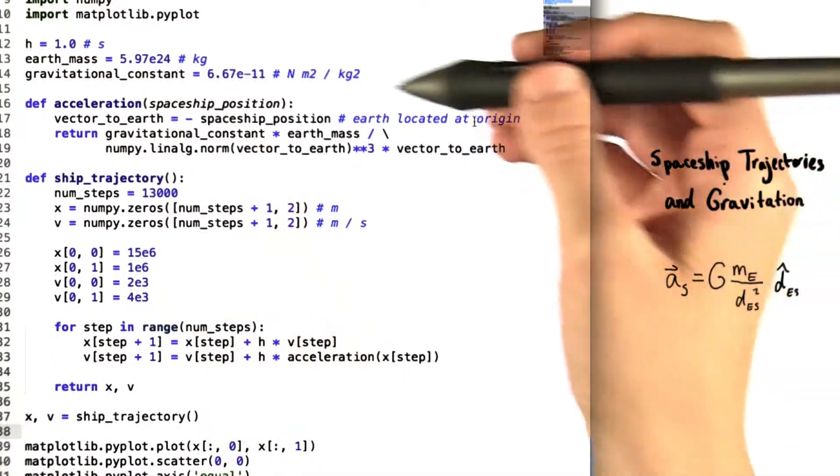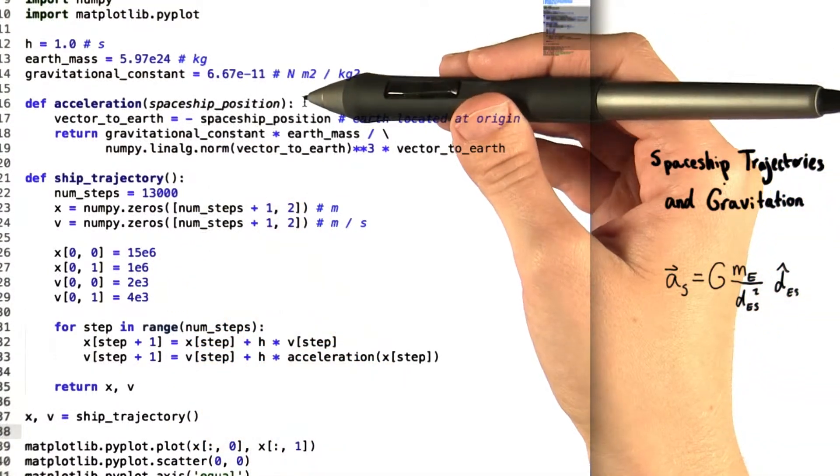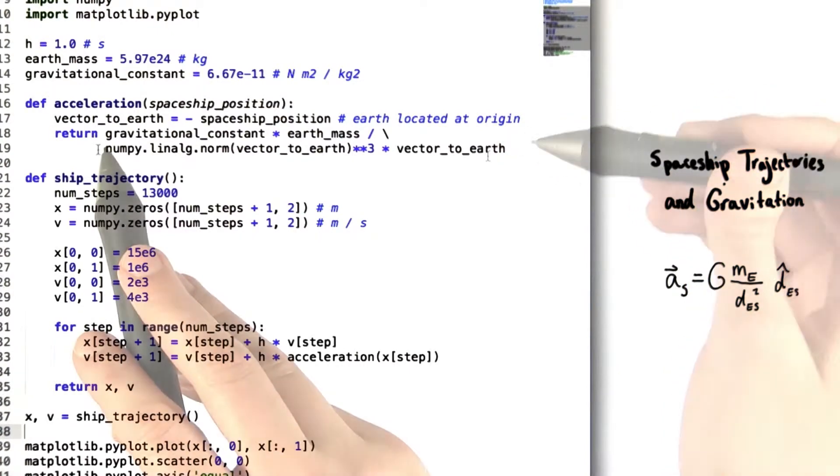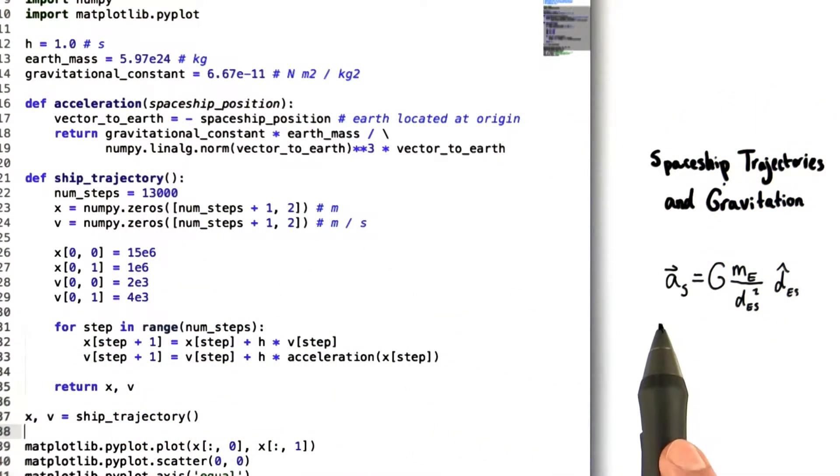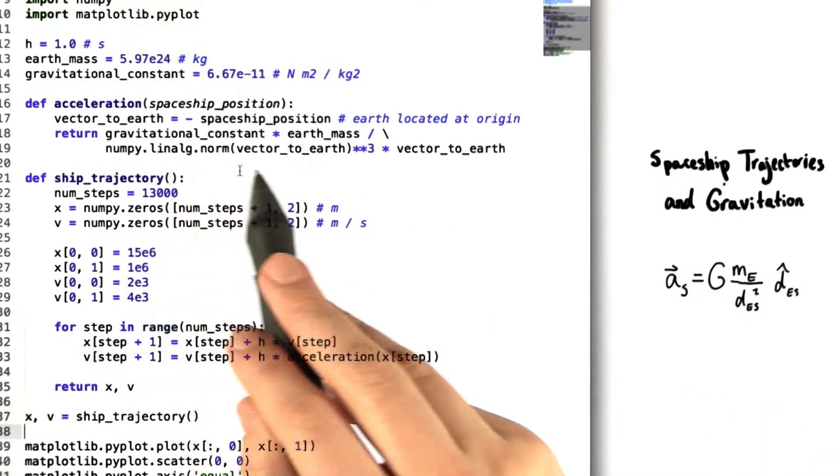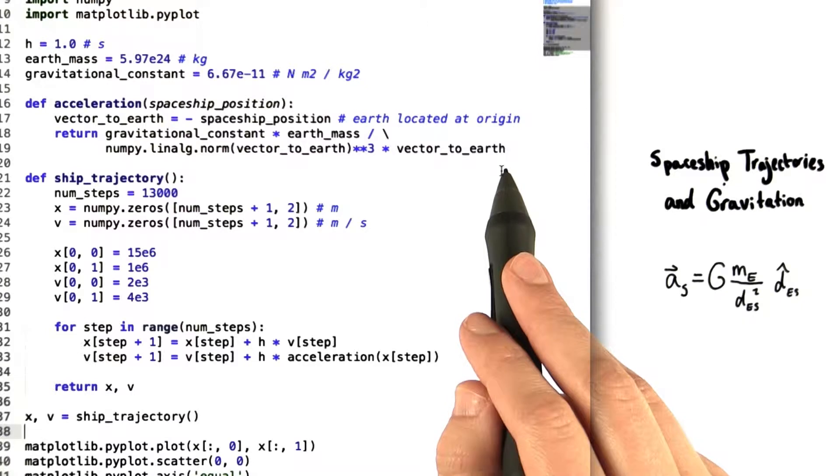Now since we're trying to define the acceleration, what we want to return is an expression for acceleration. So we write return and then a translation of this equation over here that we talked about earlier. We have the gravitational constant, which is big G, times the Earth mass, which is ME, divided by this expression that looks pretty tricky. So let's dissect that briefly.